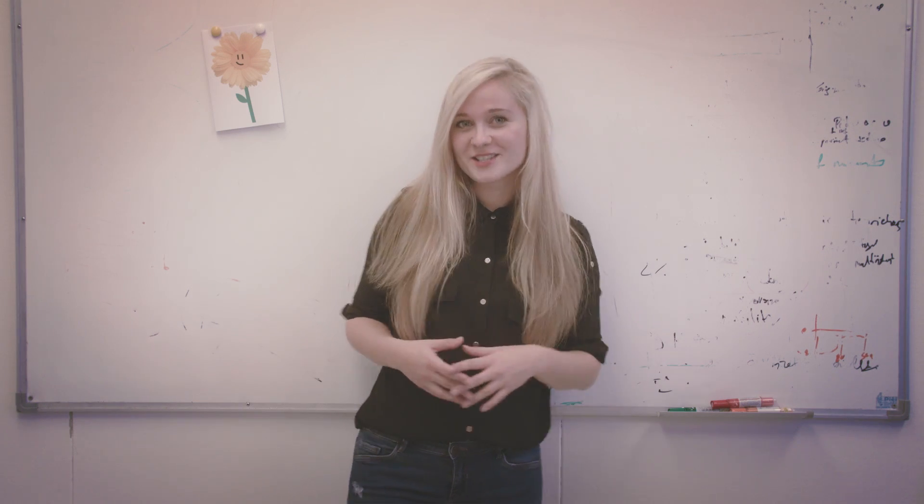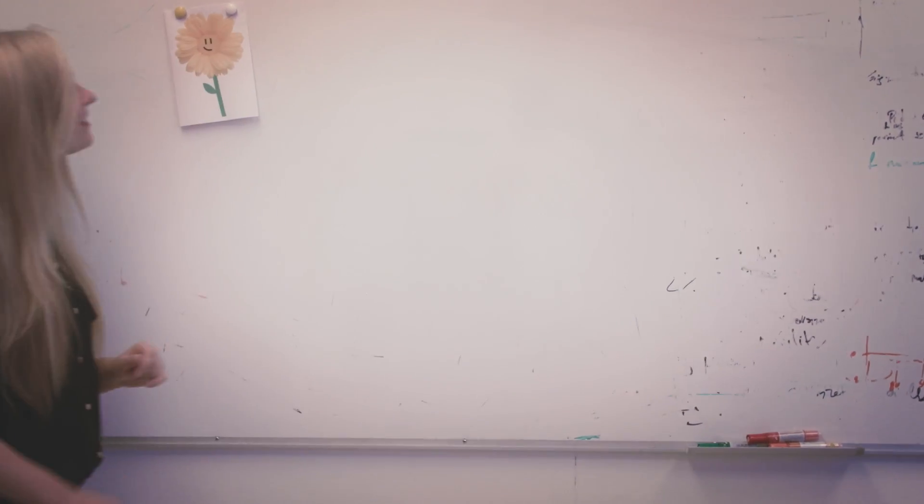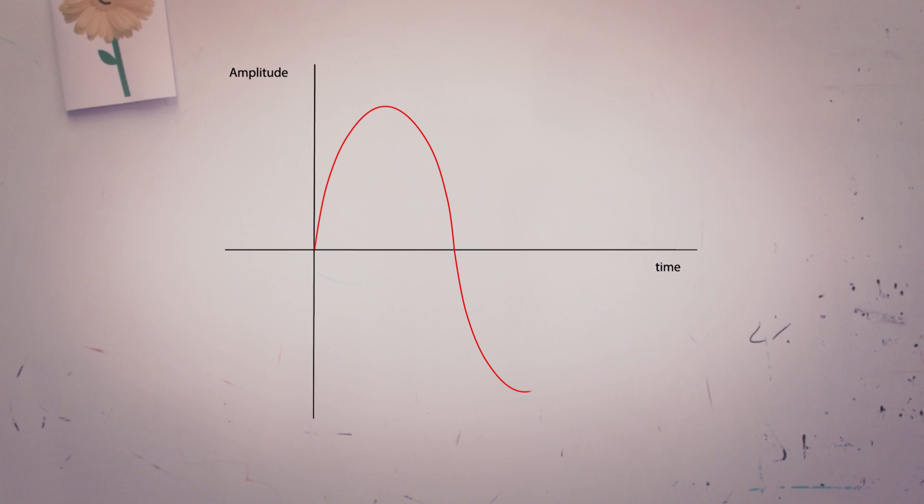So, how does spectrum analyzer work? Let's look at one simple voltage signal Y of T. Our signal is represented with its amplitude A and frequency F. If we look at this signal through spectrum analyzer eyes, we will see something like this.